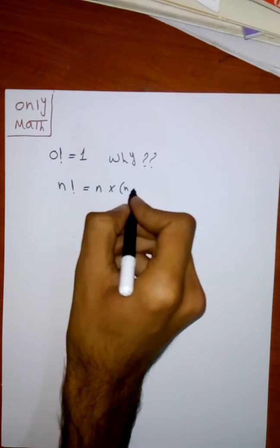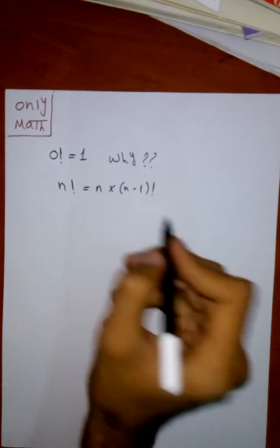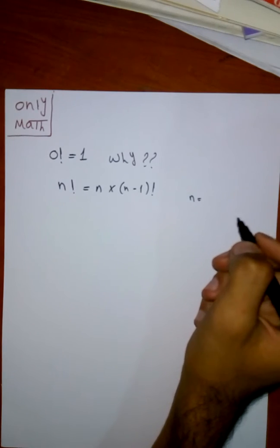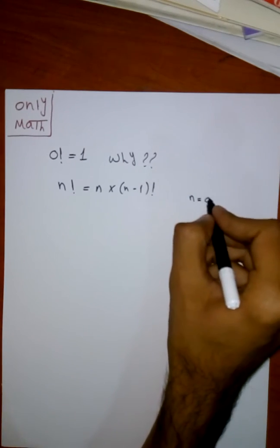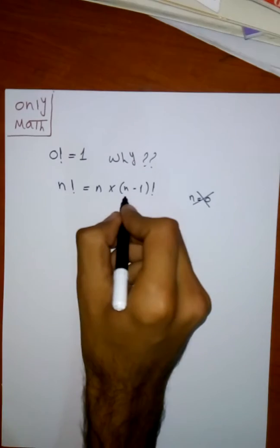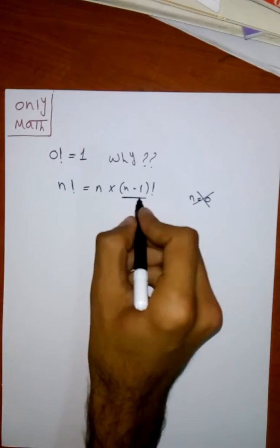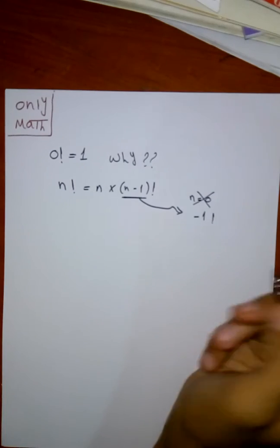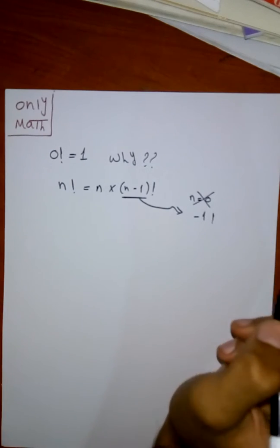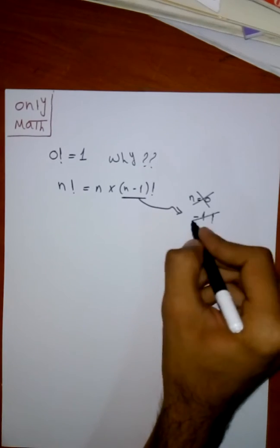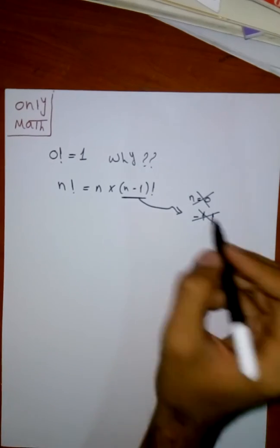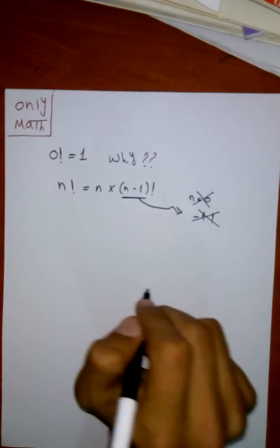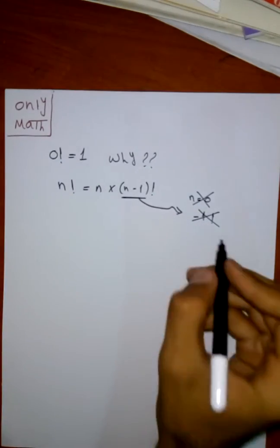We can substitute n by any number, but we cannot substitute n by zero. Why? Because if you substitute zero, it will be negative one factorial, and we know there is no factorial for negative numbers. So you cannot substitute in this rule by zero or a negative number.